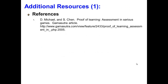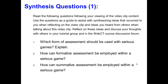This brings us to the end of this particular video clip. Just to point out the reference of Michael and Chen — this was an article that appeared in Gamasutra titled 'Proof of Learning: Assessment in Serious Games.' I would strongly recommend you take a look at it; it is available freely on the web. This also leads us to our list of synthesis questions. Number one: which form of assessment should be used with serious games? Explain. Number two: how can formative assessment be employed within a serious game? And finally, number three: how can summative assessment be employed within a serious game?